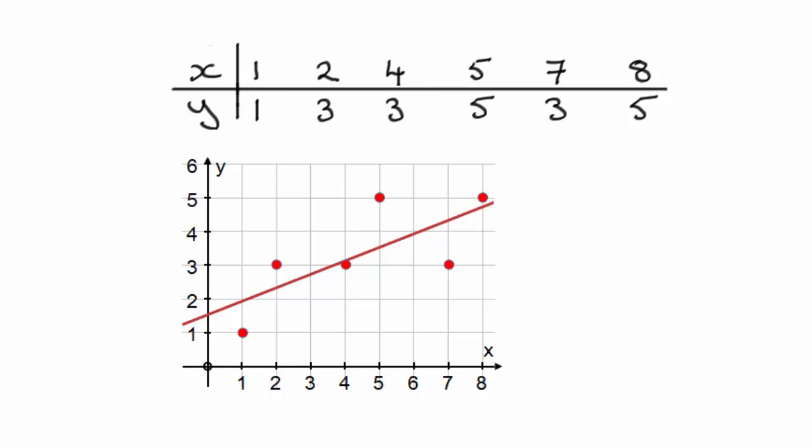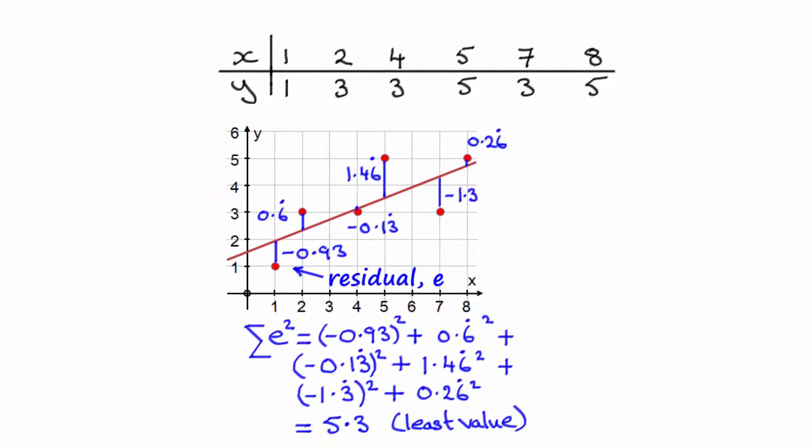Remember the line of best fit was where we looked at the residuals, that was these distances here from the points to the line. And what we had to do was find a line which minimized the sum of the squares of these distances, and we did that calculation and it came to 5.3. And it turns out that this is the least value which gives us this regression line for y on x.